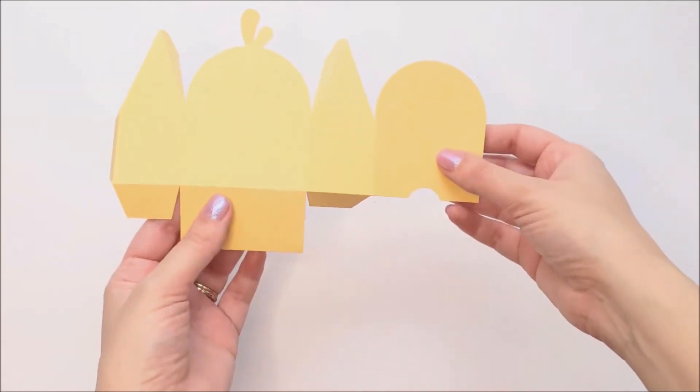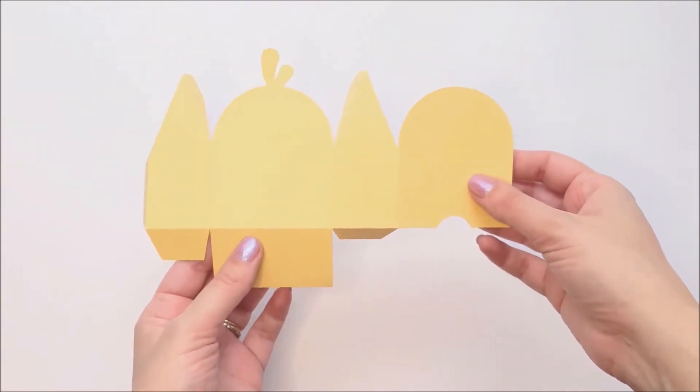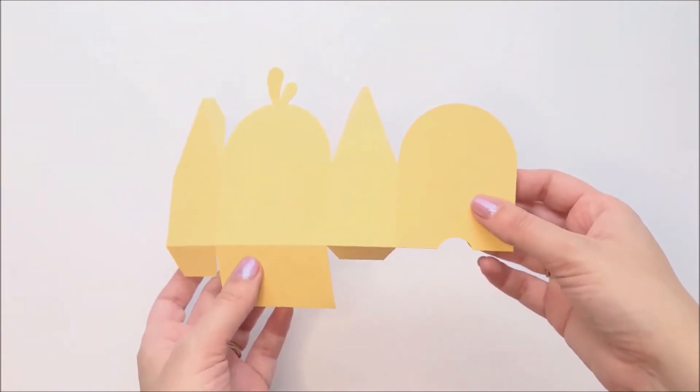After cutting your pieces on your machine, you'll start by pre-folding your box along the score lines, like I've done here.